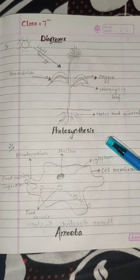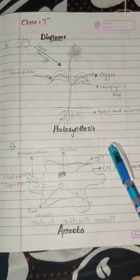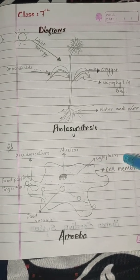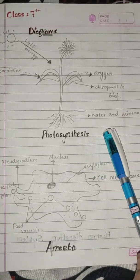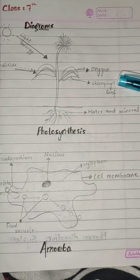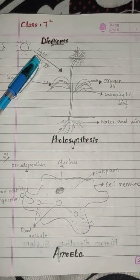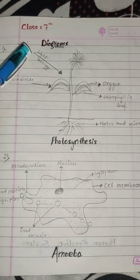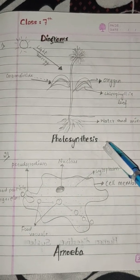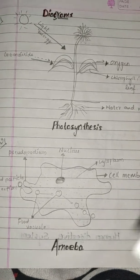Here you can see the first diagram, that is photosynthesis — the process of photosynthesis — which is from your first lesson, Nutrition in Plants. Here you can see: water and minerals absorbed by the roots, chlorophyll in the leaf, oxygen given out by the plant, carbon dioxide taken in by the plant, and light energy — you can also mention it as solar energy, that will also be correct.